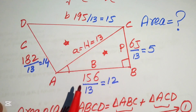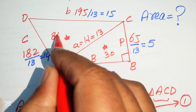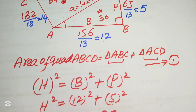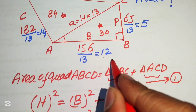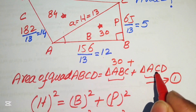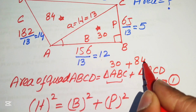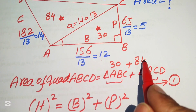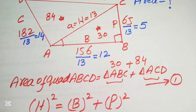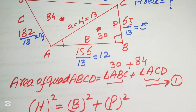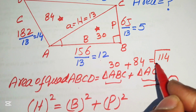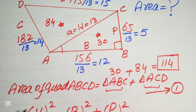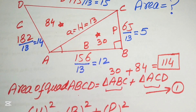We now have both areas: triangle ABC = 30 and triangle ACD = 84. Adding them together: area of quadrilateral ABCD = 30 + 84 = 114. So 114 is the area of quadrilateral ABCD, and this is our final answer. Thank you for watching.